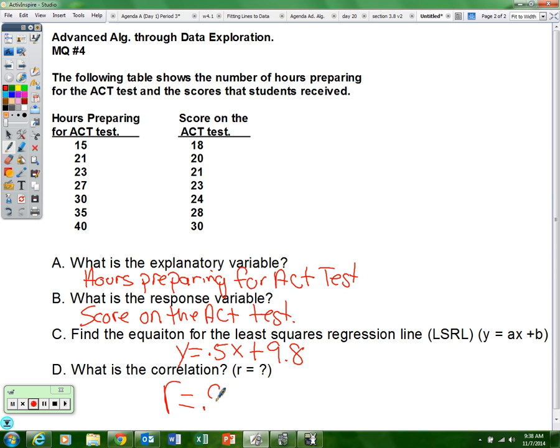And we get the R is 0.99. It is positive and it is very strong. So there is a very strong, positive relationship between the hours preparing for the ACT test and the score that you receive on the ACT test.